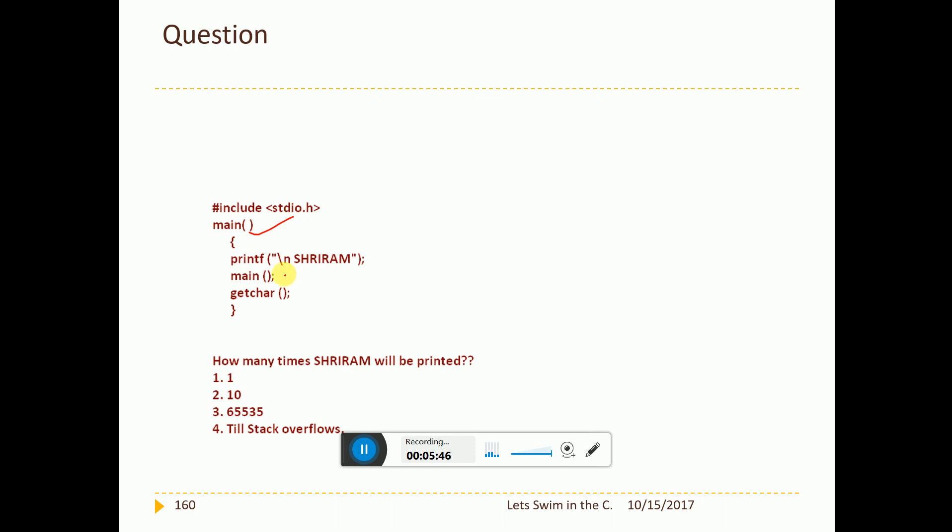Main. Inside main I call main again. This is called recursive call. What will be happening as the output? How many times freedom will be printed? Till stack overflows. The answer is quite simple. It is till the stack overflows. So this is called recursion.